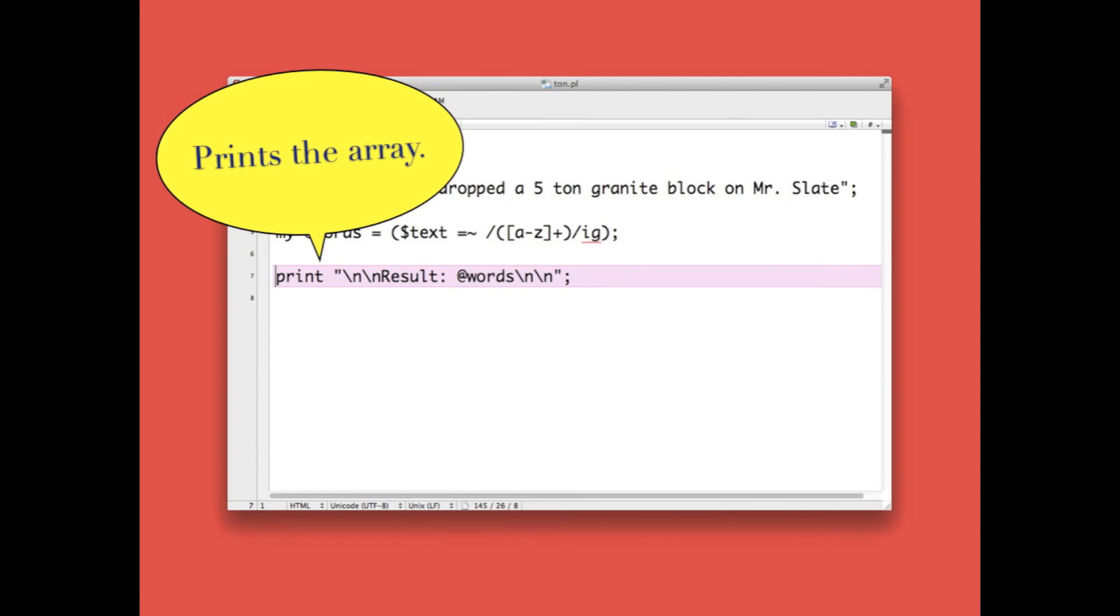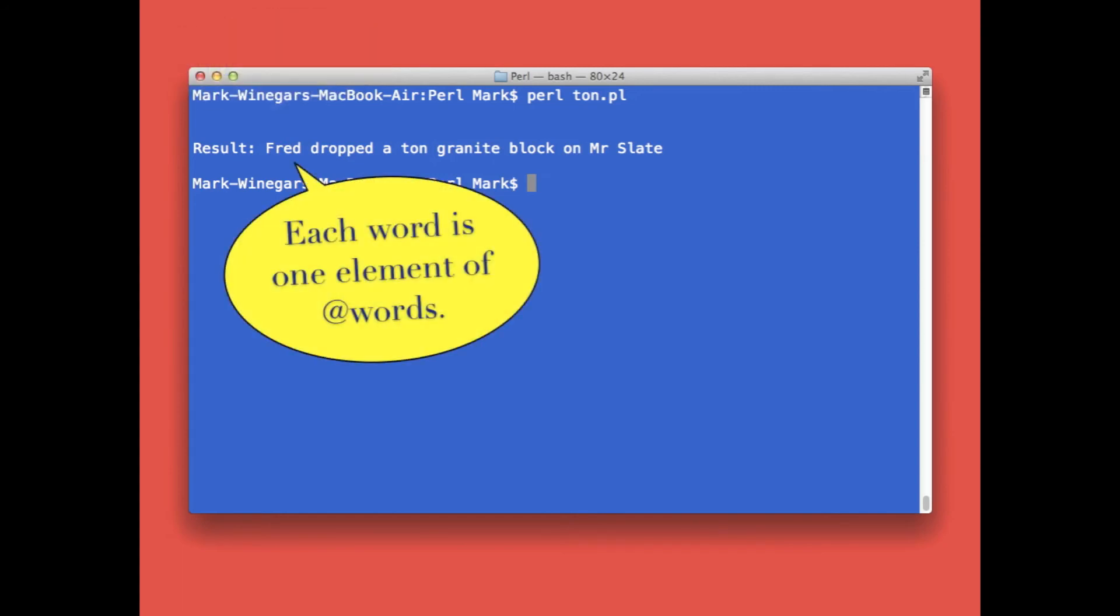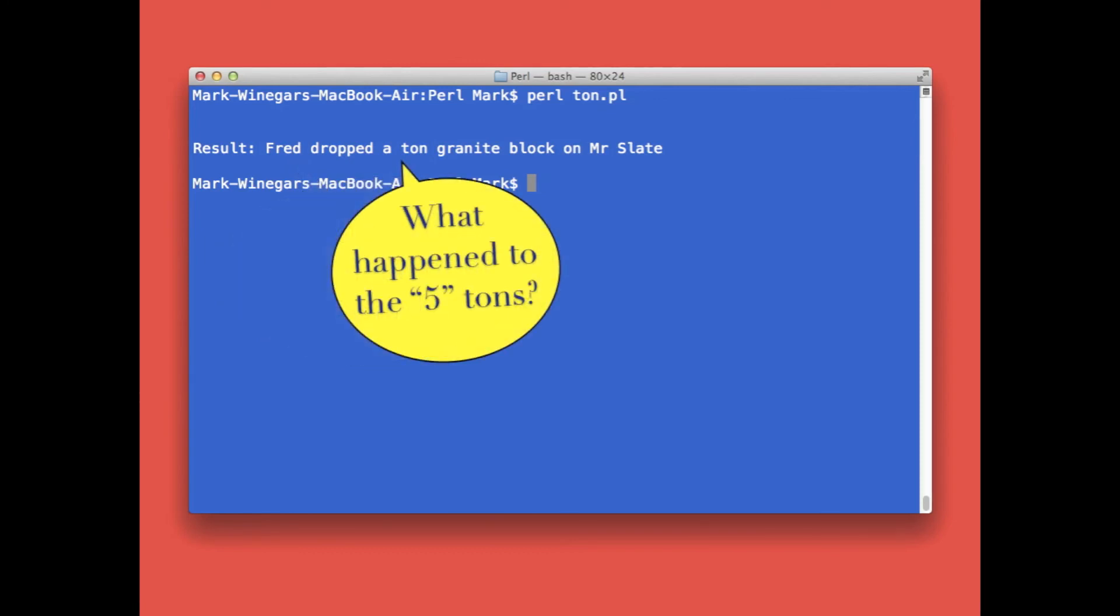The final statement in our script prints out the array. Here's our test run: it prints out literally 'Result:' and then Fred dropped a ton granite block on Mr. Slate. Each word is one element in the array @words, and notice the number five is missing.